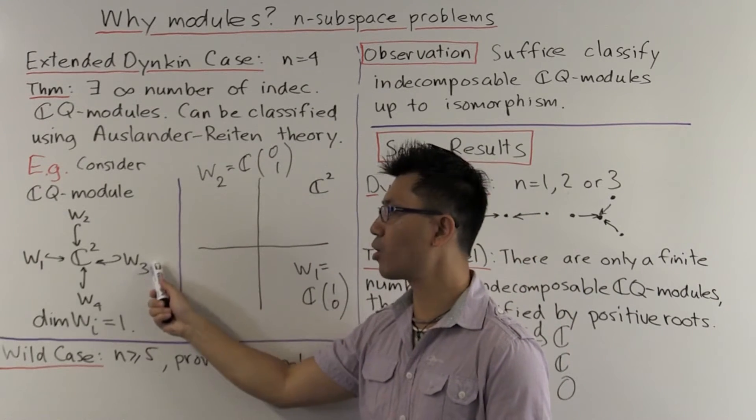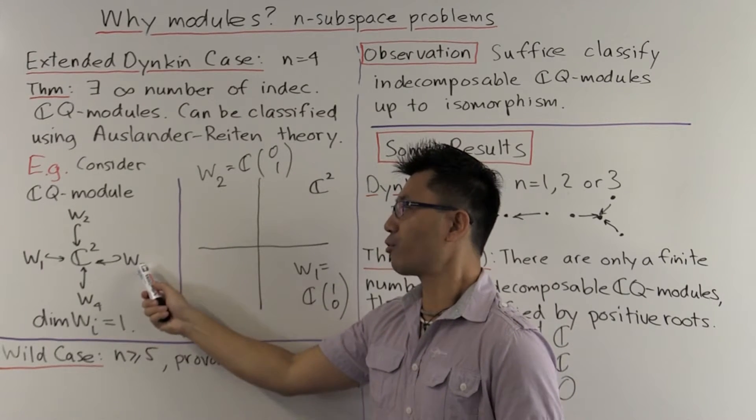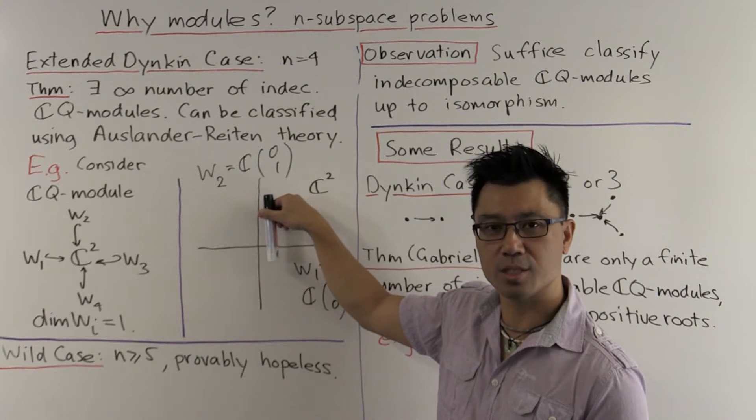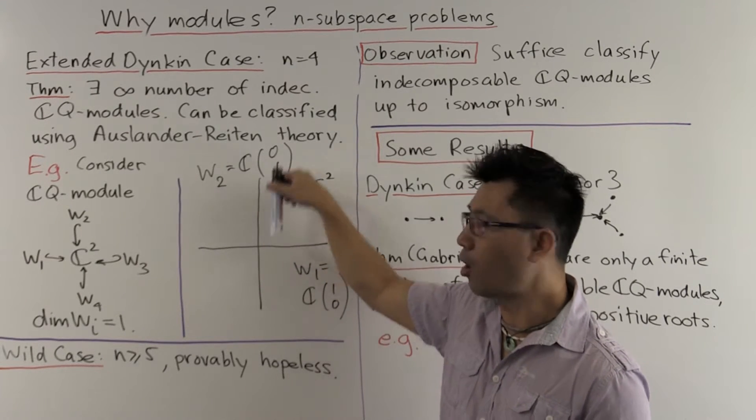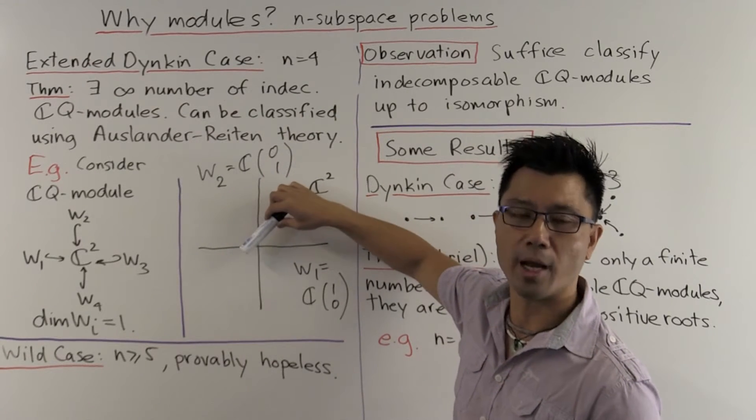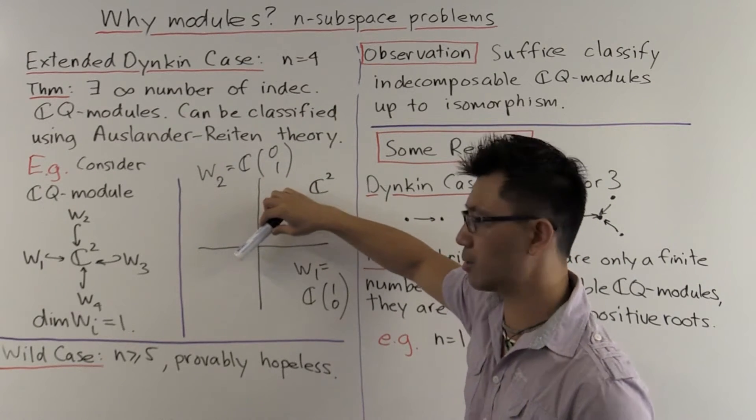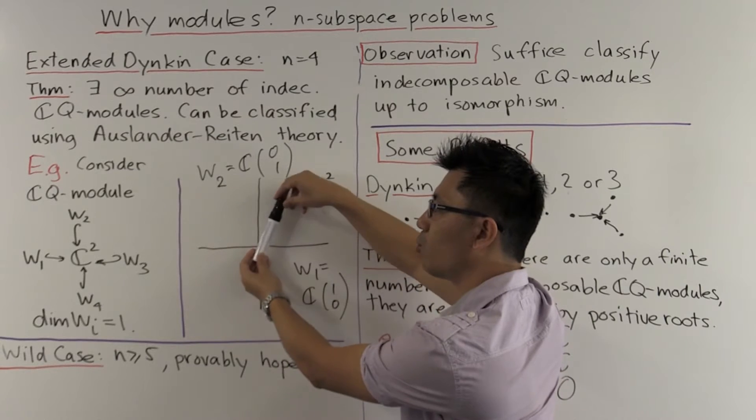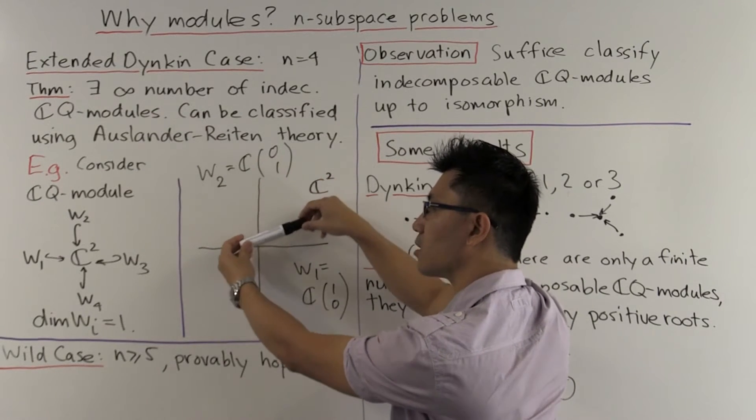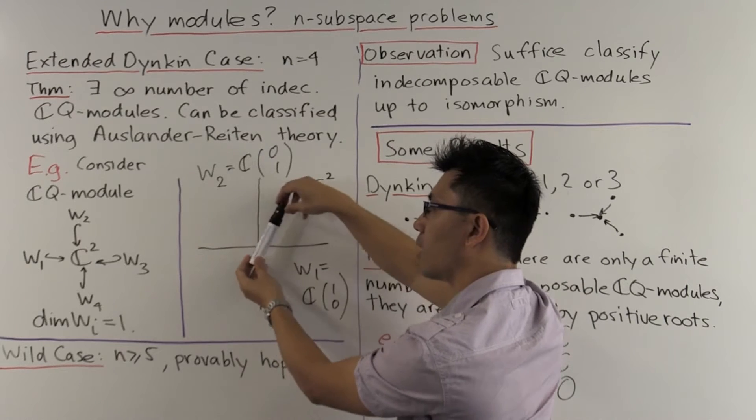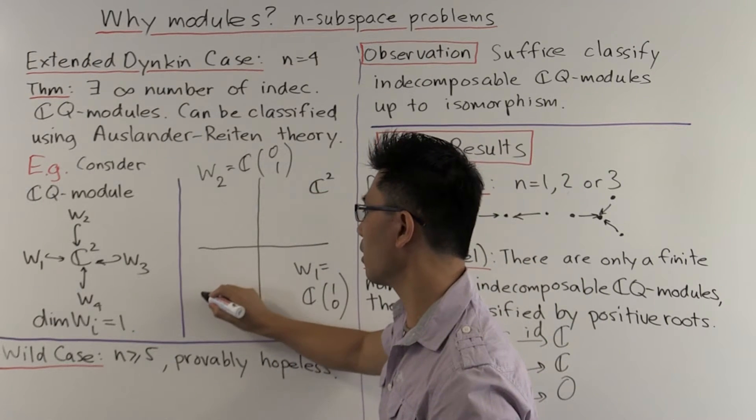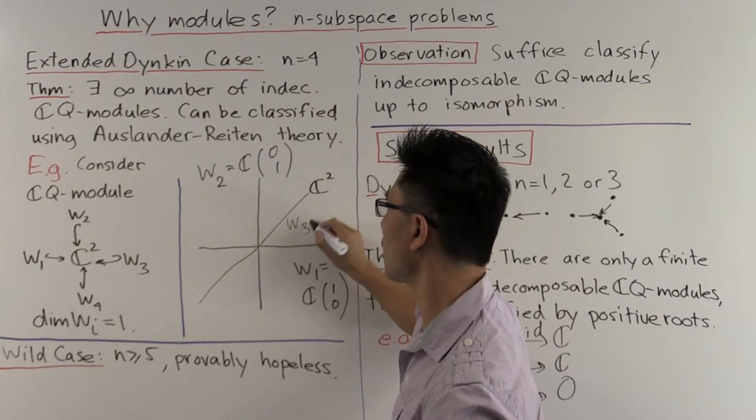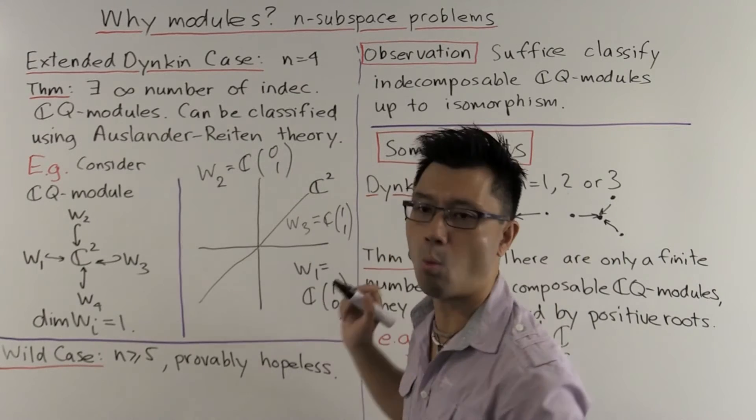What about W3? W3 could be the same as W1 or W2, and again that reduces us to the three subspace problem, or it could be something else. What other change of coordinates can you use? Well, you can still rescale along here and along here, and that will change the gradient of this subspace here. So in fact, we can fix it, as long as it's distinct from W2 and W1, to be W3 equals C times, for example, (1,1).